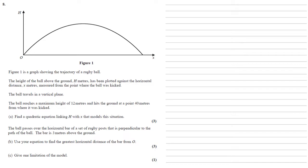We need to find a quadratic equation linking h with x that models this situation. So the first thing to note is that this is a quadratic shape, it's symmetrical, and it's going through the x-axis at 0 and 40, which is when it hits the ground again. So we know that it's going to look in form h equals ax, x minus 40. We just need to work out what this a is.